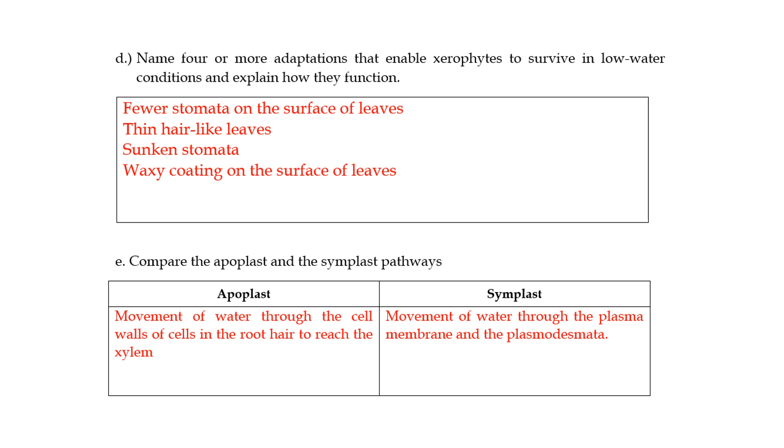Compare the apoplast and the symplast pathways. This was a question I used to get when I was a teacher which is always like how is it any different? Well the apoplast will move water through the cell walls and it will move water through the cell walls in order to reach the root hair. Meanwhile in the symplast pathway the water will move through the plasma membrane and the plasmodesmata. I know that's probably not detailed enough but please check out the video that I did on chapter seven, the videos I've done on chapter seven where I explained these two differences.